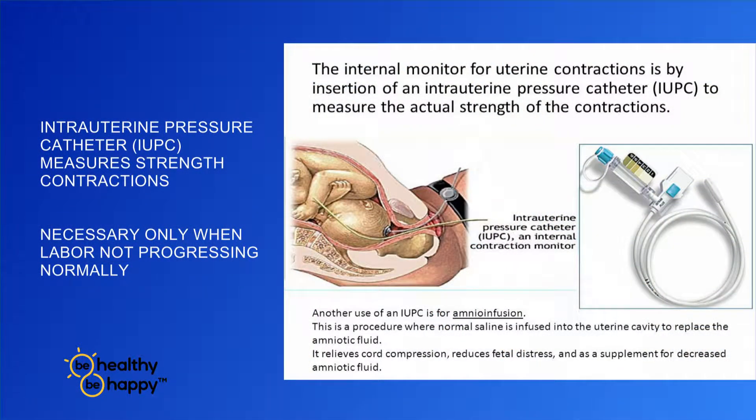If we're uncertain about the quality of our tracing, there are two things we can do. One is to insert a fetal scalp electrode — a small wire that we screw into the baby's scalp and connect to the electrode — giving us a much more precise reading of the baby's heart so we're not making false decisions. We may also need to determine whether the uterus is contracting adequately by placing an internal uterine pressure catheter inside the uterine cavity to measure contraction strength — converting external monitors to internal monitors for more precise evaluation.